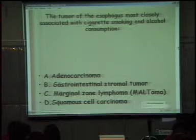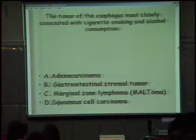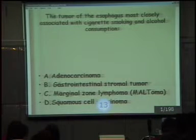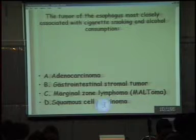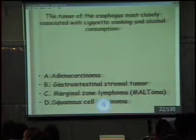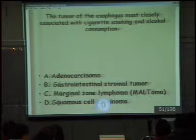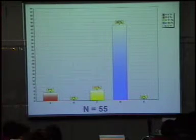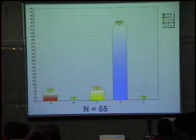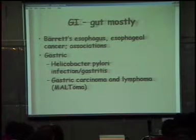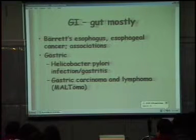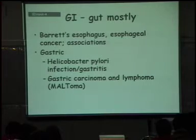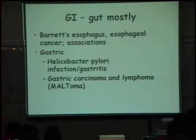The tumor of the esophagus most closely associated with cigarette smoking and alcohol consumption is squamous cell carcinoma. Barrett's esophagus carries a cancer risk among many other things. In the stomach, Helicobacter pylori is associated not only with ulcers but also with gastric carcinoma and MALT lymphomas.